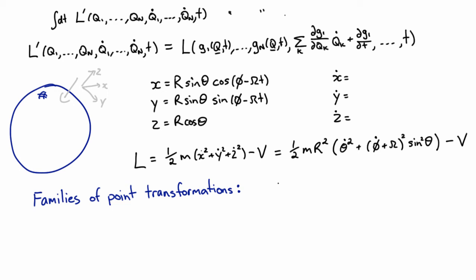Point transformations, just as we had above, except now they depend on some extra parameter. So my transformation between my little Qs and my big Qs depend not just on the big Qs, but also on one or more parameters. So I'll call that S1 up to SK, and then all these. Now we've got lots of very simple examples of that.